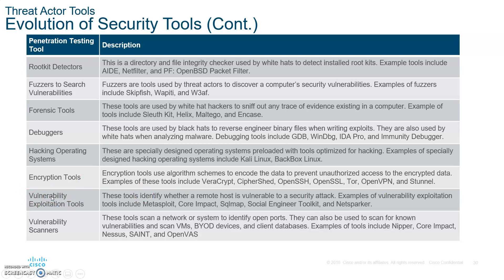Everything I'm mentioning we'll be using in the ethical hacking course — not this course. Metasploit is a very powerful tool that allows you to break into computers, like Windows 7 or Windows 8, very easily. All the target has to do is click on something and you're in, and they won't even know. Vulnerability scanners — we'll cover those too. Nessus and OpenVAS are free downloads you can use right now.